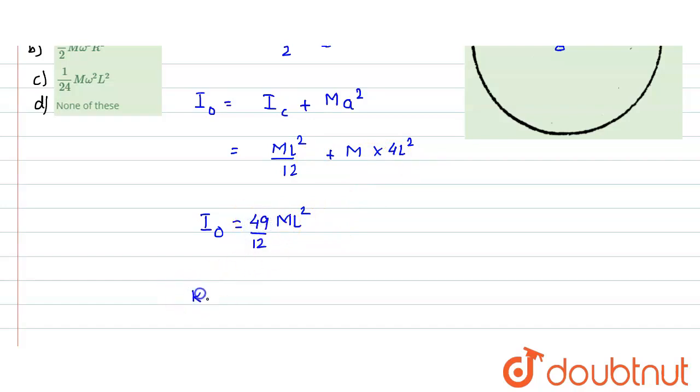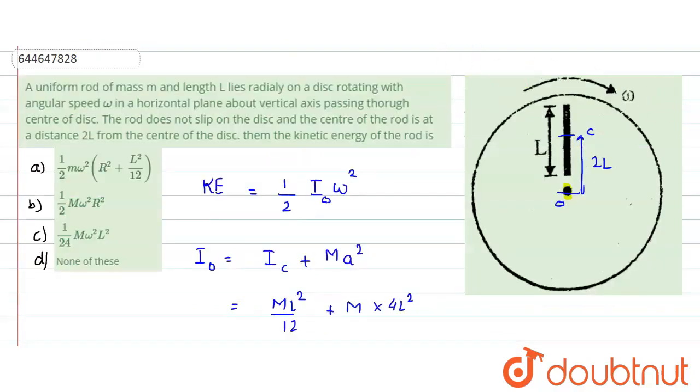Now the kinetic energy would be equals to 1 divided by 2 into I naught, 49 by 12 into ml square omega square. So this would turn out to be 49 by 24 m omega square l square.